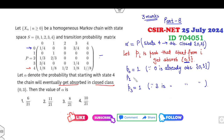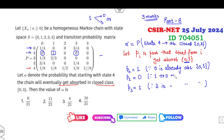What about P_1? State 1 cannot go to state 0, and state 1 cannot go to state 3 either. That means the transition probability from state 1 to the closed set {0, 3} is 0, so P_1 = 0.